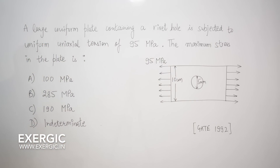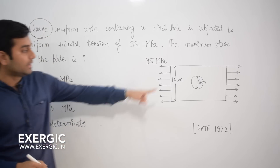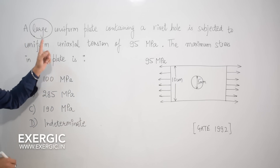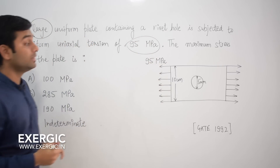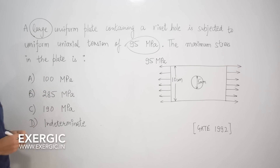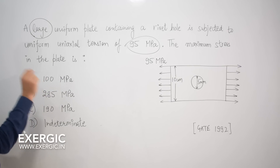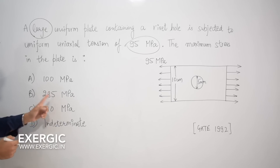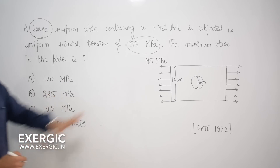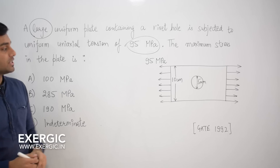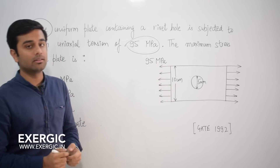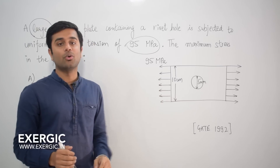The question says that a large uniform plate containing a rivet hole, as you can see in the diagram, is subjected to a uniform uniaxial tension of 95 MPa. The question asks what the maximum stress in the plate is, with four options: 100 MPa, 285 MPa, 190 MPa, and indeterminate. The width of the plate is 10 cm and the size of the hole is 5 mm.